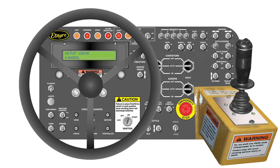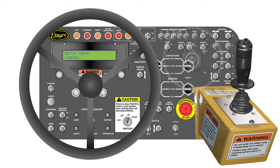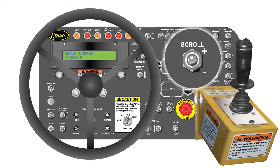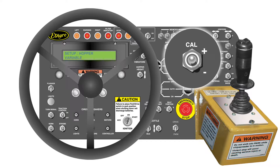This screen is used to set the type of drive in the machine, either two-wheel drive or four-wheel drive. Use the cal switch to toggle between two and four-wheel drive. This screen covers fixed and variable hoppers. Use the cal switch to toggle between fixed and variable hoppers. When this is set for your machine, push the scroll switch down to move to the next screen.